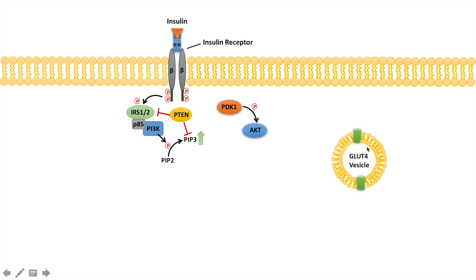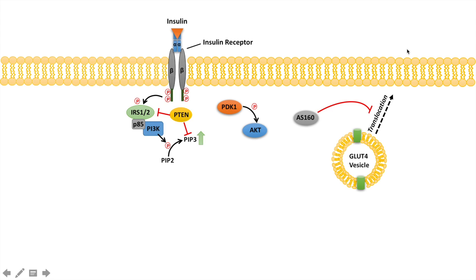GLUT4 is an insulin-sensitive, insulin-dependent glucose transporter. It's inside the cell, but it's useless there because GLUT4 needs to be embedded in the actual plasma membrane to bring glucose into the cell. Translocation must occur — GLUT4 vesicles must translocate to the plasma membrane. However, a protein called AS160 inhibits this process, so in a cell not stimulated by insulin, AS160 continuously inhibits GLUT4 vesicular translocation to the membrane.